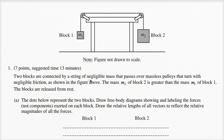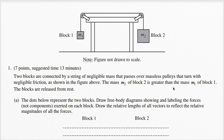Two blocks are connected by a string of negligible mass that passes over massless pulleys that turn with negligible friction, as shown in the figure above. The mass m2 of block two is greater than the mass m1 of block one. The blocks are released from rest.